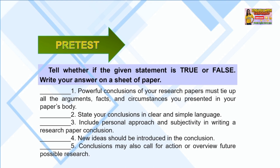Number 1: Powerful conclusions of your research papers must tie up all the arguments, facts, and circumstances you presented in your paper's body. Number 2: State your conclusions in a clear and simple language. Number 3: Include personal approach and subjectivity in writing a research paper conclusion. Number 4: New ideas should be introduced in the conclusion. Number 5: Conclusions may also call for action or overview future possible research.